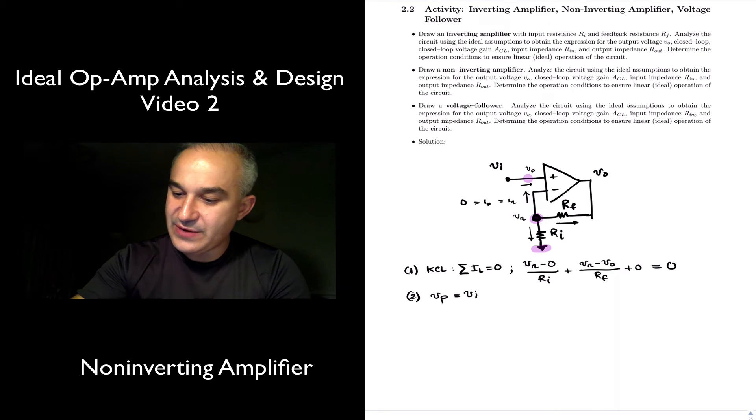Vp is just equal to Vi, and if you recall, our second golden rule of operational amplifier circuits with negative feedback, the first one, remember, the currents are equal to zero, the second one is that if there is a pathway from the output back to the negative input, in this case, that's the case, then the operational amplifier tries to adjust Vn so that it's equal to Vp, which in this case is equal to Vi.